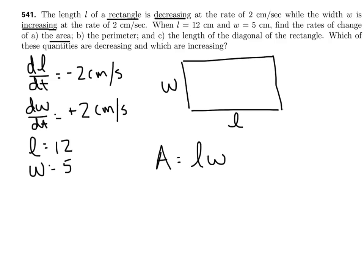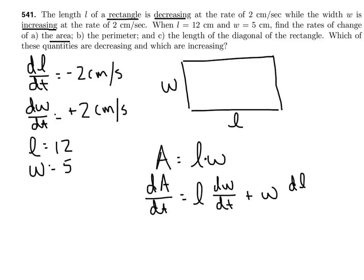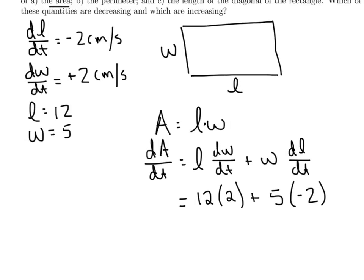For area, A = L × W. Both L and W are variables — neither is a constant. We differentiate with respect to time using the product rule: dA/dt = L · dW/dt + W · dL/dt. Substituting: dA/dt = 12(+2) + 5(−2) = 24 − 10 = 14. Since we're describing area, the units are centimeters squared per second, so dA/dt = 14 cm²/s.